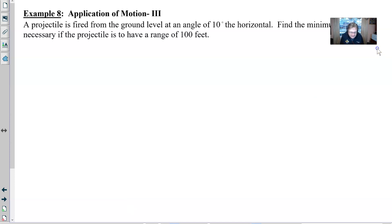We have got a projectile that is fired from ground level at an angle of 10 degrees, so not a really sharp angle by any stretch of the imagination. We want to find the minimum velocity necessary if the projectile is to have a range of a hundred feet.